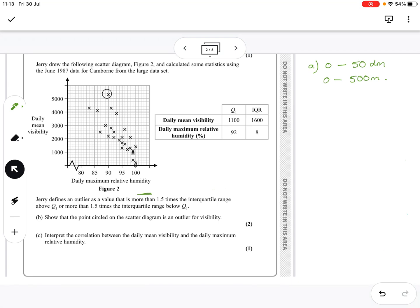Okay. Jerry drew the following scattergram and calculated some statistics using the June 1987 data for Camborn on the large data set. Here it all is. You can see that looks like there's some kind of correlation, a negative correlation.